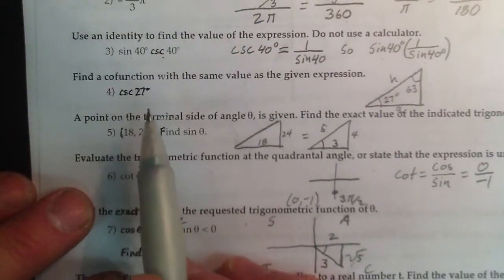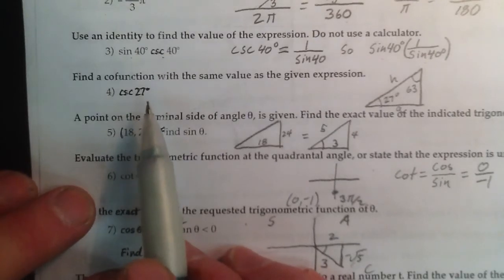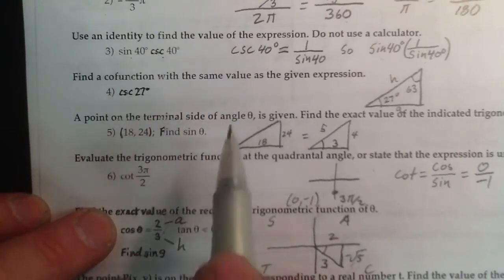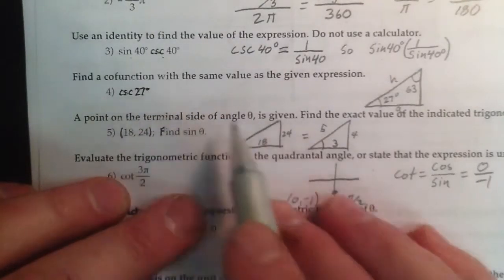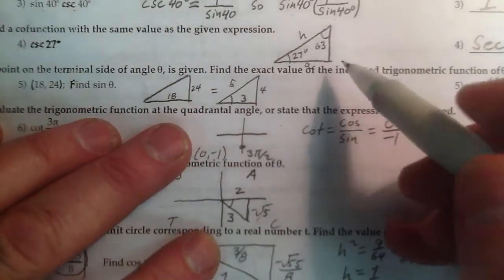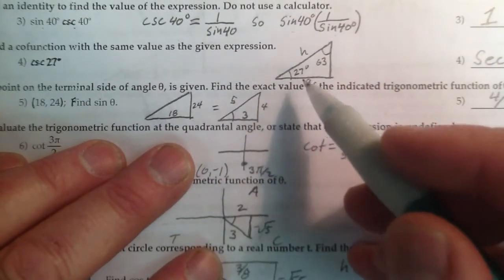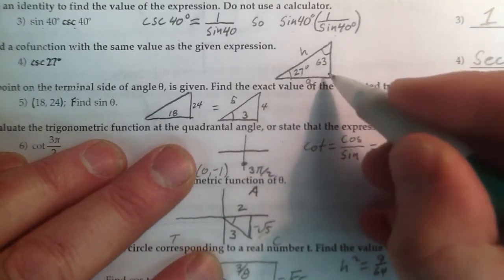Now, cofunction. There's two ways to do this. One is kind of a memorization technique, which I don't like. The other one is kind of a derivation technique. What I mean by derivation technique? I've drawn a right triangle with 27 degrees in it, and then I have a 90, and then I have its complement.